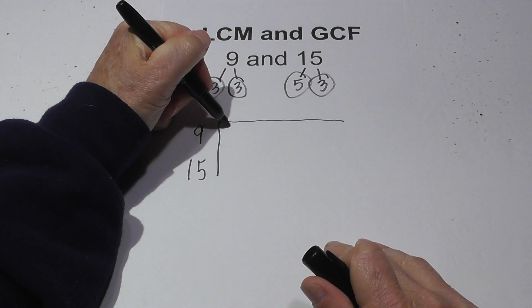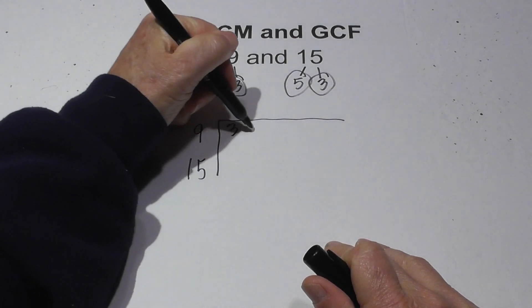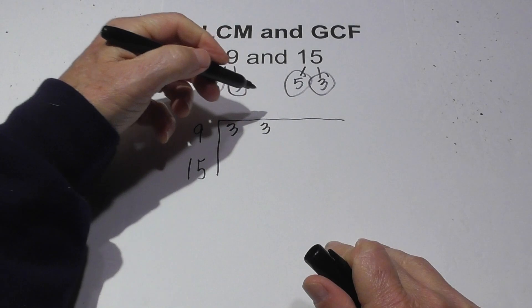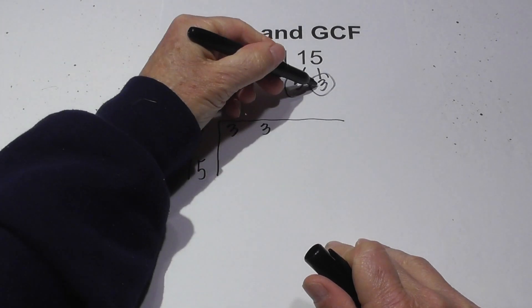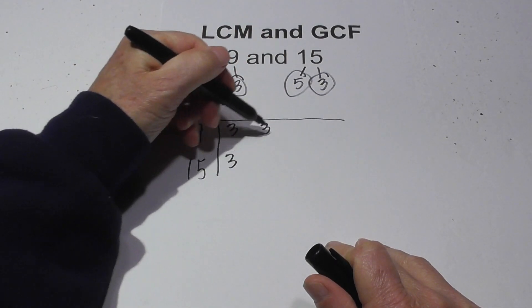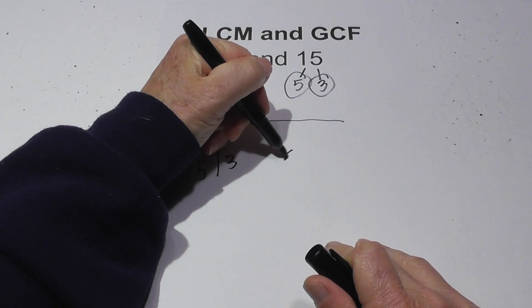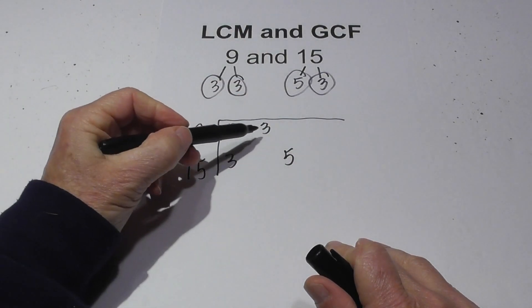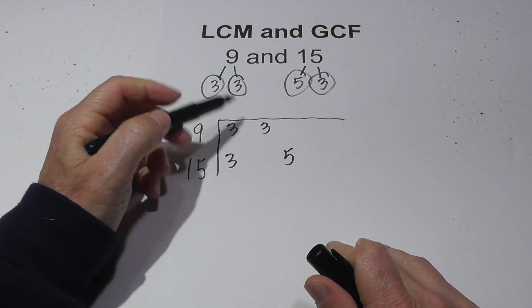I'm going to write the prime factors of 9 which is 3 and 3 and the factors of 15. I'm going to take this 3 and place it here. I'm going to skip a spot and then place the 5 there. The reason why I skipped the 3 is because I don't have another 3.